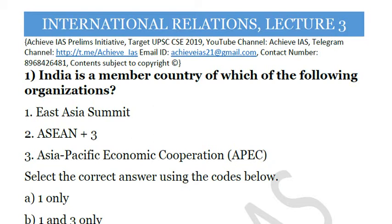The date chosen is 31st May because on 2nd June is your UPSC CSE 2019 prelims, and we will end this series only one day before your prelims exam. Let's start our discussion of today's lecture, that is International Relations, Lecture number 3.